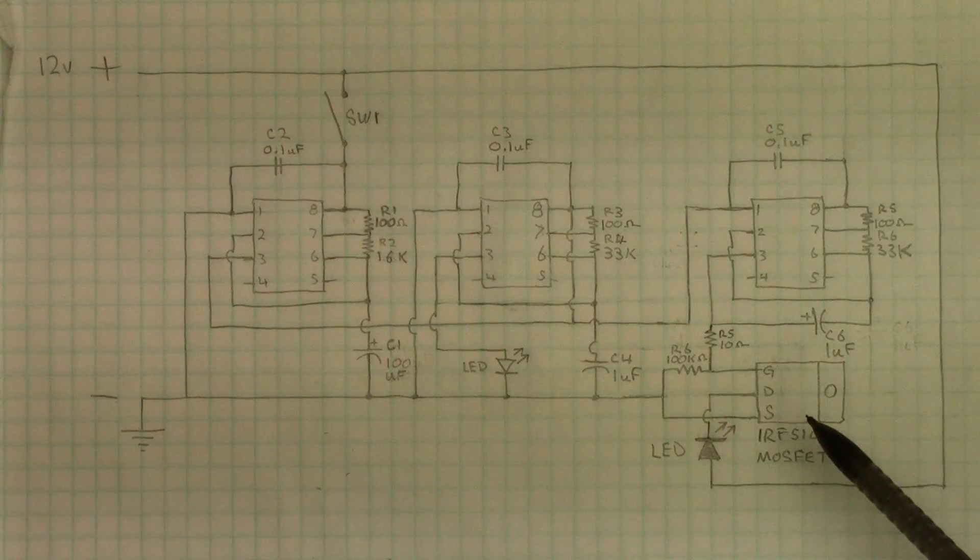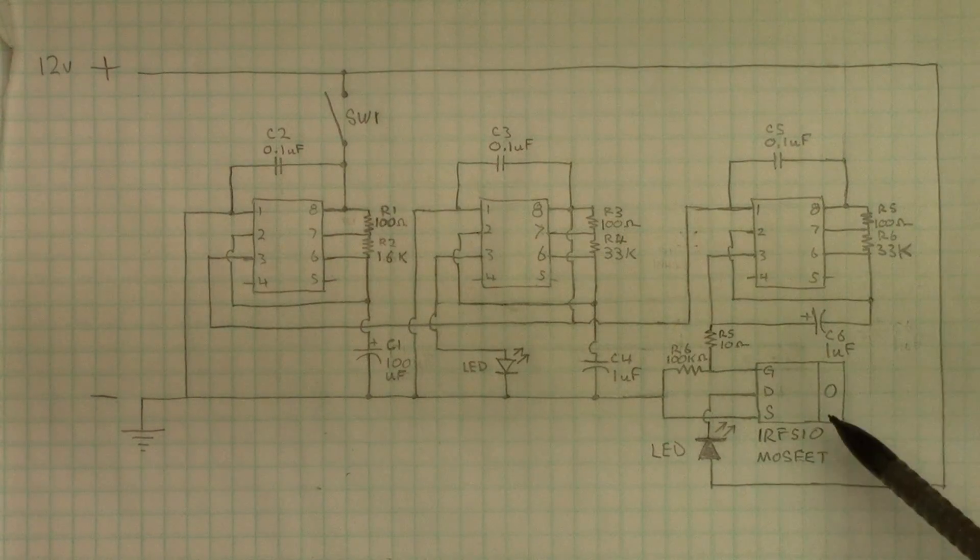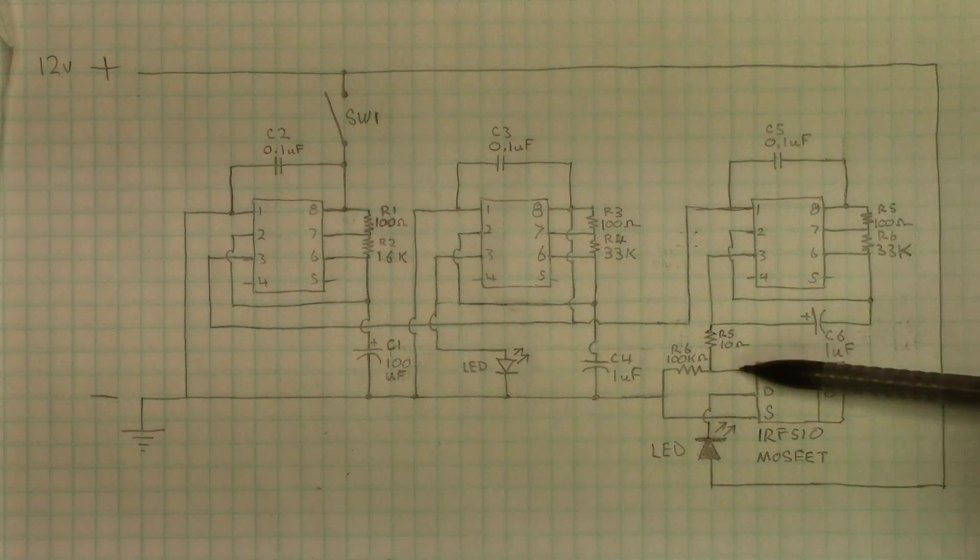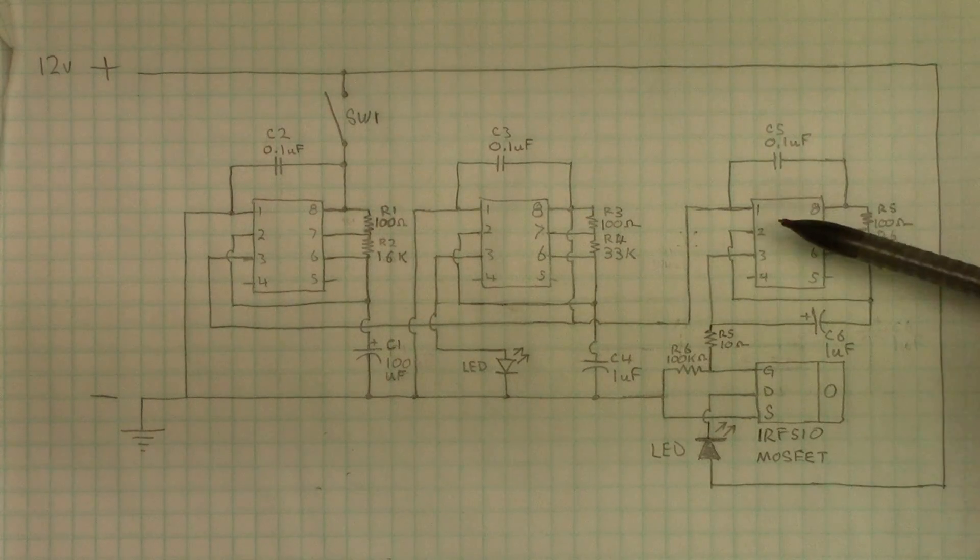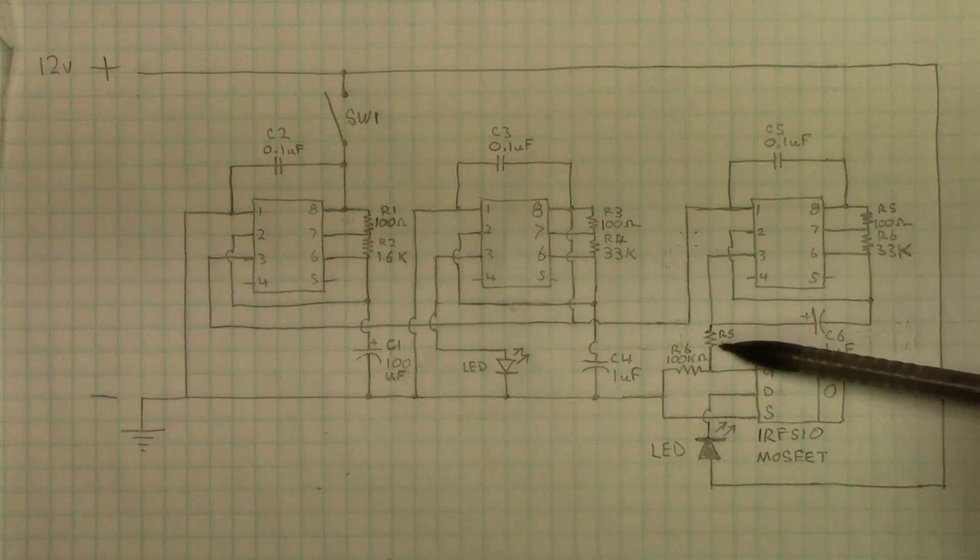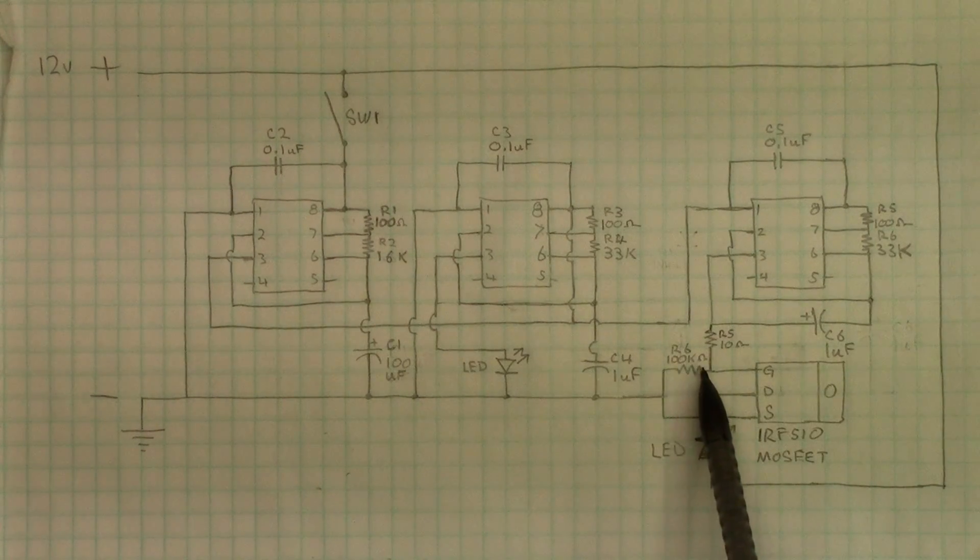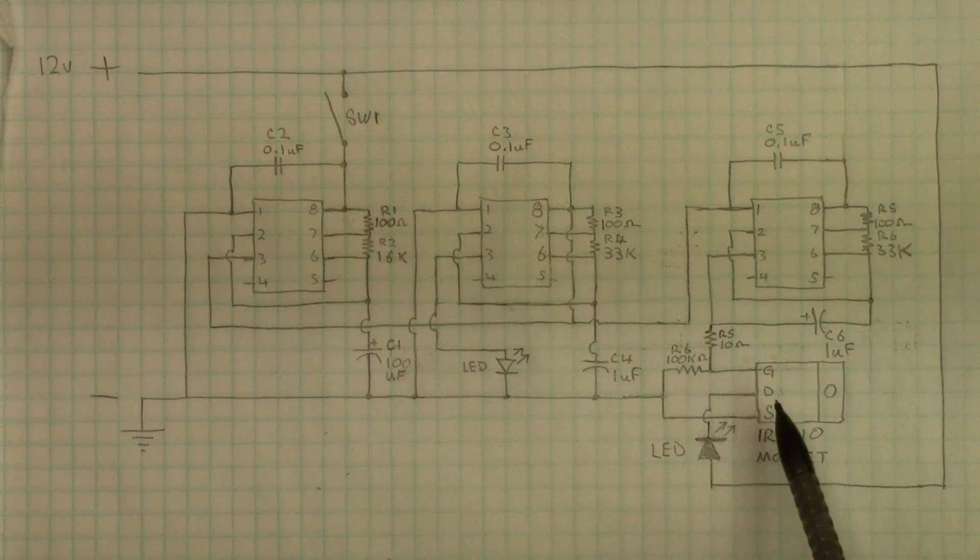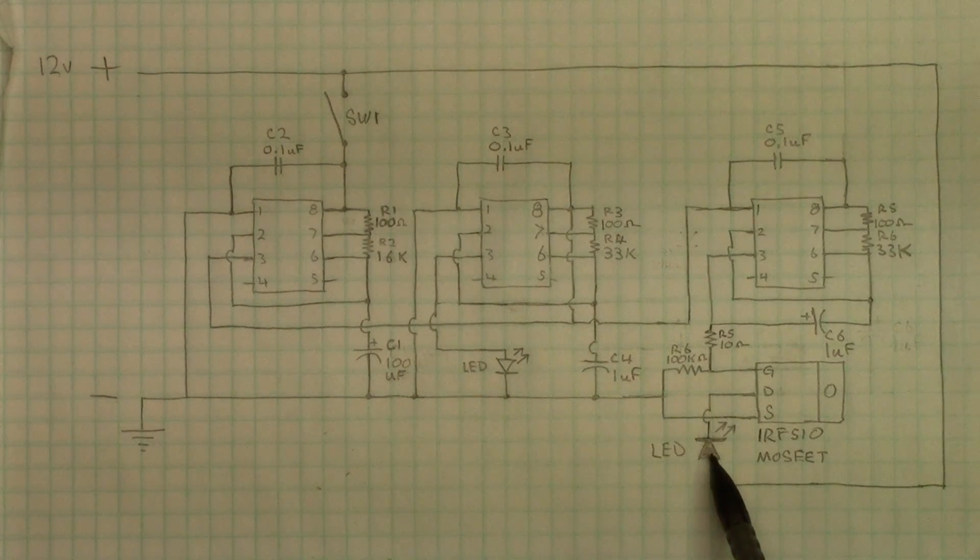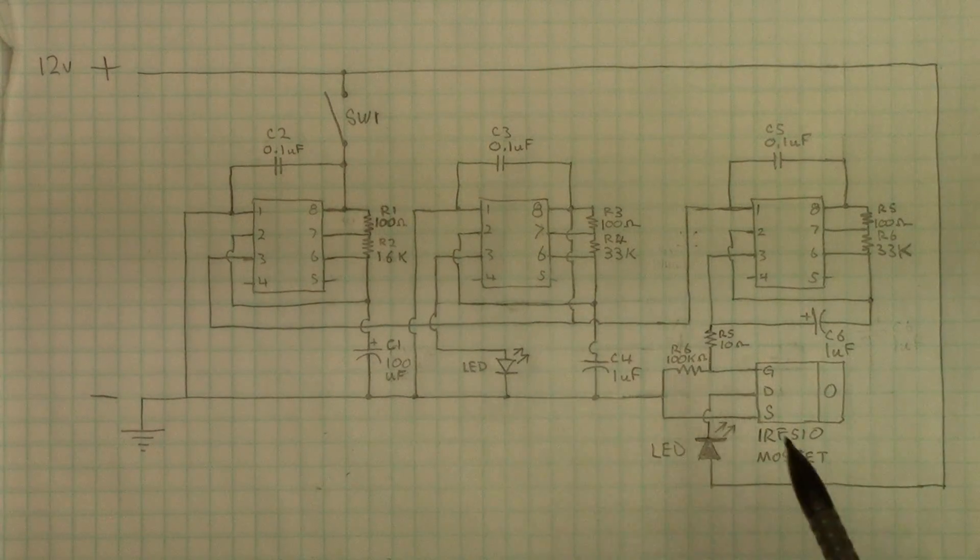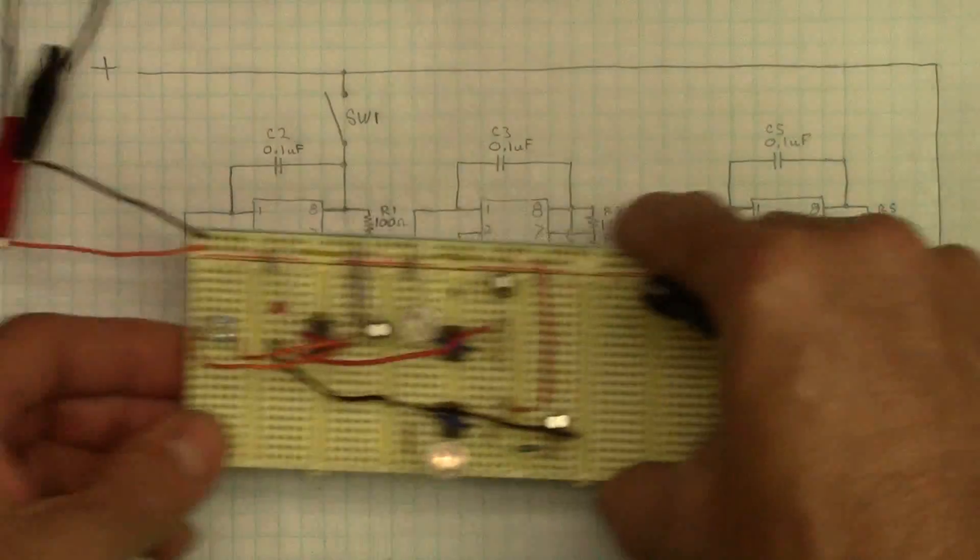Okay, the MOSFET is now part of the schematic. I've put it right here, and it's got the gate, drain, and source right here, and the gate is connected to the output of pin 3 on this astable circuit. It comes in through a 10 ohm resistor, and then we have a 100k ohm resistor to ground to make sure that the MOSFET is turned off when it has no voltage. The drain is connected here to our LED light. The other side of that LED light goes to 12 volts positive, and the source is connected to ground. Now we just need to put it on the breadboard.